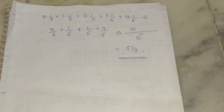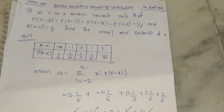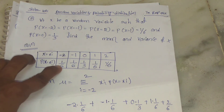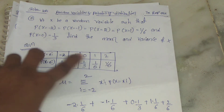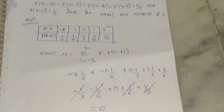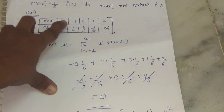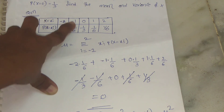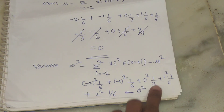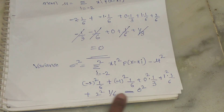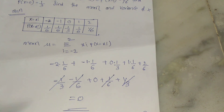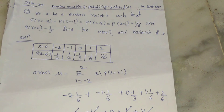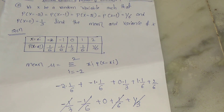So to summarize: to find mean, use μ = Σ x_i × P(X = x_i), giving 0. For variance, square each x_i value, multiply by probability, and subtract μ². If you have any doubts about this problem, comment in the comment box. If you like my video, please like, share, and subscribe to my channel. Thanks for watching.